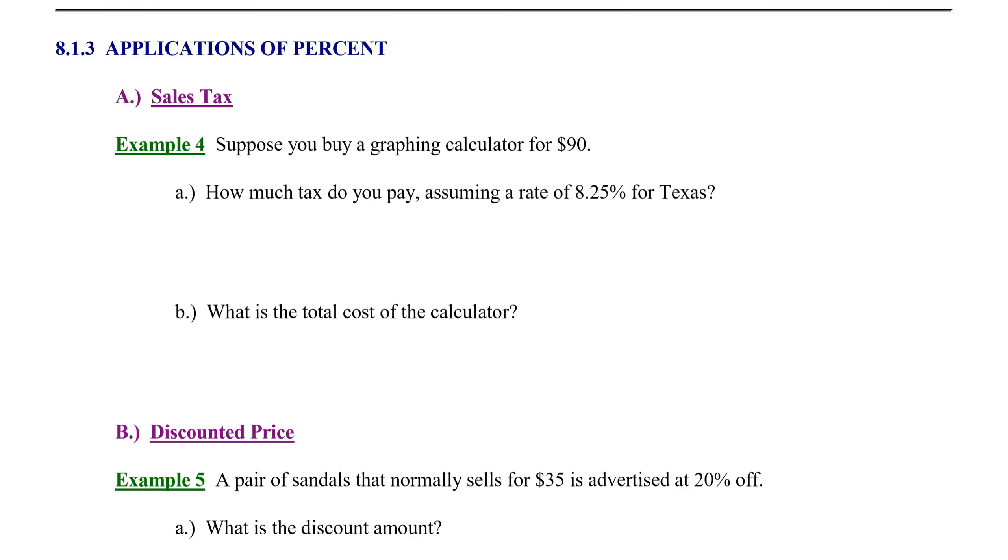Suppose you buy a graphing calculator for $90. How much tax do you pay, assuming a rate of 8.25% for Texas? The tax we pay is a portion of the total price. We're using our basic percent formula: A = P × B.